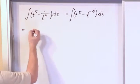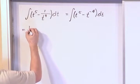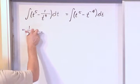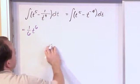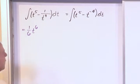Because when I do the integration, the first term is 1/6, t to the 6th power, because 5 plus 1. That's taking the rule that we've learned before.